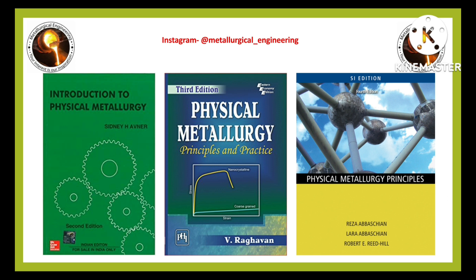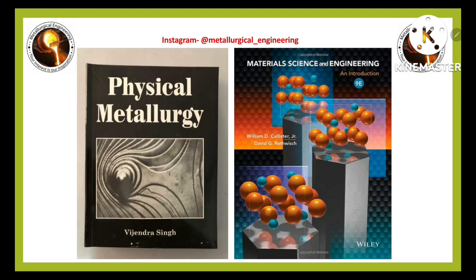Important books for physical metallurgy are: 'Introduction to Physical Metallurgy' by Avner, 'Physical Metallurgy: Principles and Practice' by Narayan, 'Physical Metallurgy Principles' by Reed-Hill, and 'Physical Metallurgy' by Bijendra Singh — particularly useful for in-depth details of heat treatment. For basic materials science, 'Materials Science and Engineering: An Introduction' by William D. Callister is recommended.